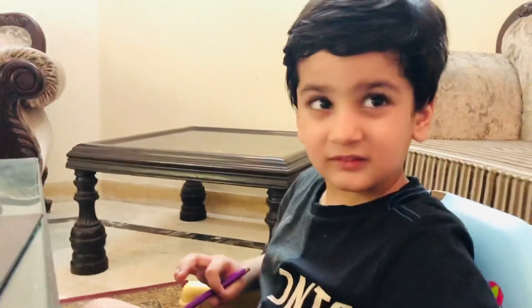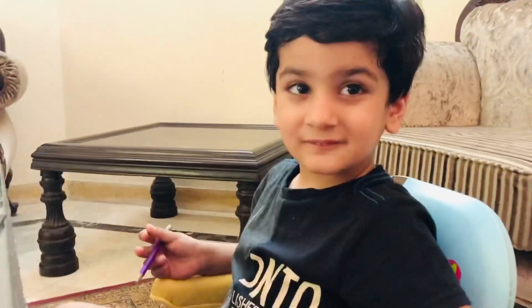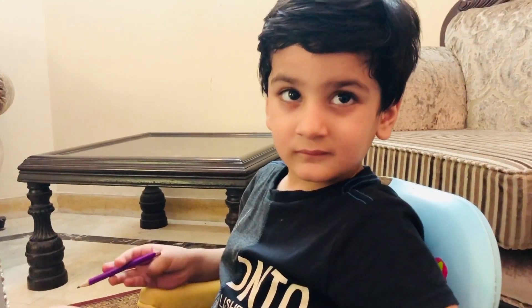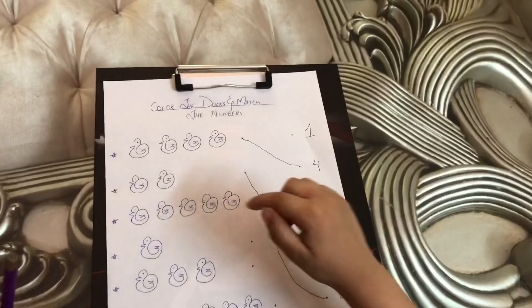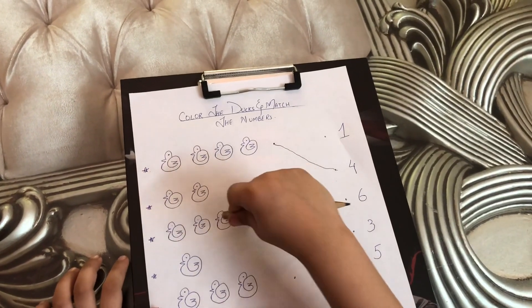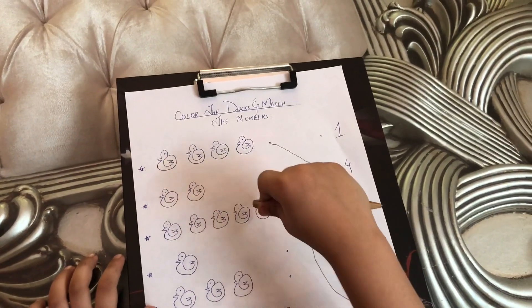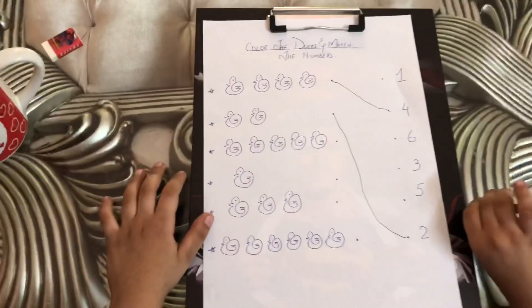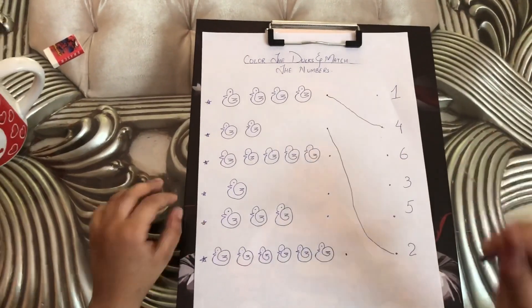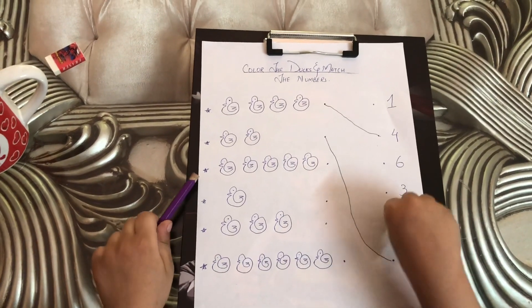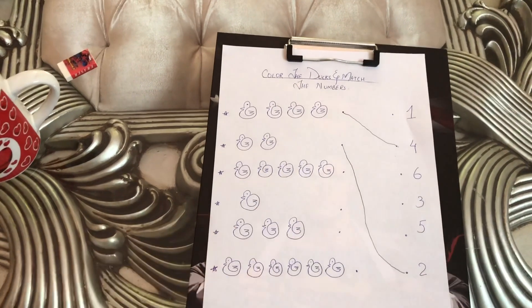Enjoying, Bilal? Yeah! Or are you tired? No! Good, Bilal. Going further? Yes! Now count the third line. 1, 2, 3, 4, 5 — five ducks! Now find where it is 5. Yes, try them. Find it. This one? Yeah!